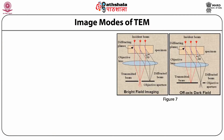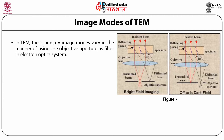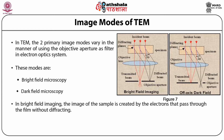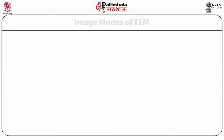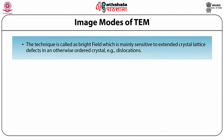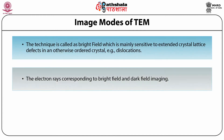In TEM, the two primary image modes vary in the manner of using the objective aperture as a filter in the electron optics system. These modes are bright-field microscopy and dark-field microscopy. In bright-field imaging, the image of the sample is created by electrons that pass through without diffraction; a diaphragm is used to stop the diffracted electrons. In dark-field imaging, the image is formed by the diffracted beam, as shown in figure 7. Bright-field imaging is mainly sensitive to extended crystal lattice defects in an otherwise ordered crystal, for example, dislocations.